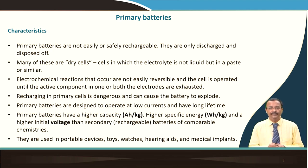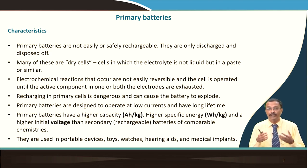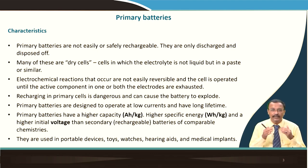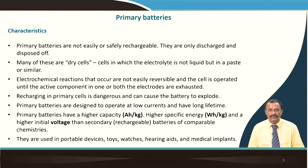Primary batteries have a set of characteristics. They are not easily rechargeable — they are only discharged and disposed of. Many of these are dry cells in which the electrolyte is not liquid but in the form of a paste. The electrochemical reactions that occur are not easily reversible, and the cell is operated until the active material in one or both electrodes is completely exhausted. Recharging a primary cell is dangerous and can cause the battery to explode — never try to recharge a primary battery.